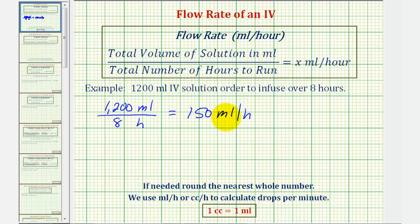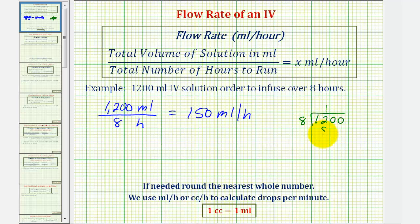If we're not allowed to use a calculator, we have to perform long division. We would have 1,200 divided by eight. There's one eight in 12. One times eight is eight. We subtract, and this difference is four. Bring down the next digit of zero.